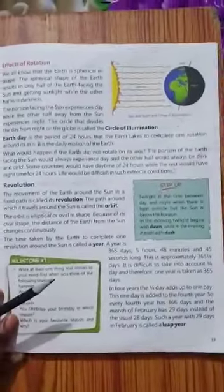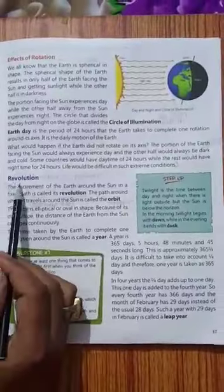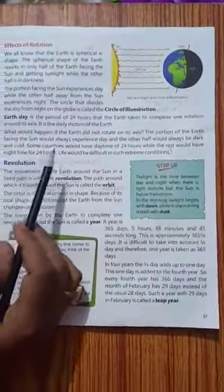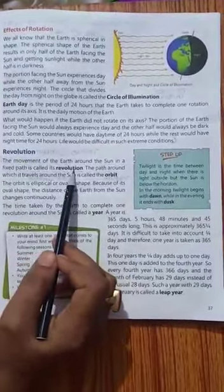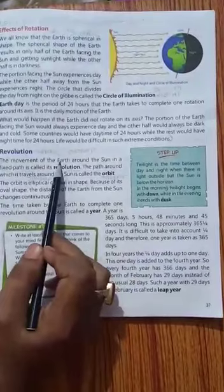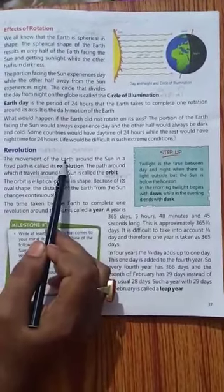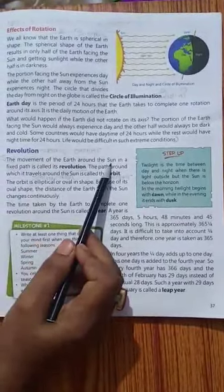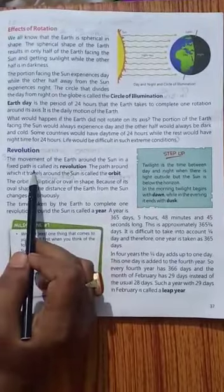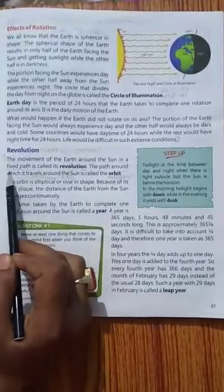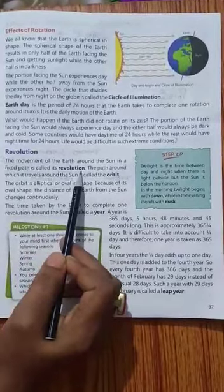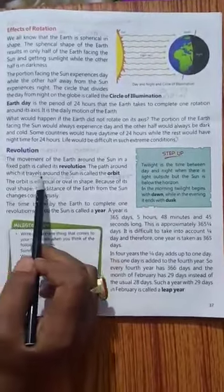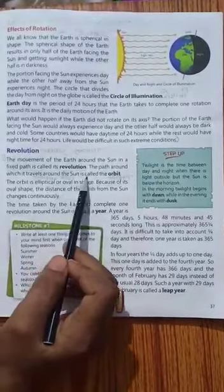Today's new topic is revolution, means chakkar lagana. The movement of the earth around the sun in a fixed path is called revolution. Jab earth chakkar lagati hai sun ke, around the sun, aur ek fixed path mein, uska jo raasta hota hai, path means raasta fixed hota hai, usse revolution bolta hai.